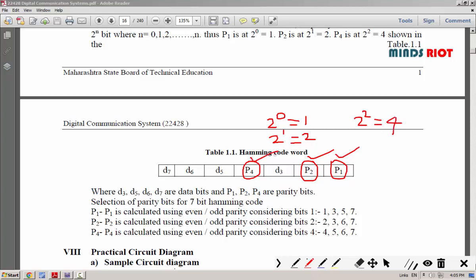In this way, all three parity bits will be positioned at first position, second position, and the fourth position. Now, the remaining 4 bits will be your data bits D3, D5, D6, and D7.